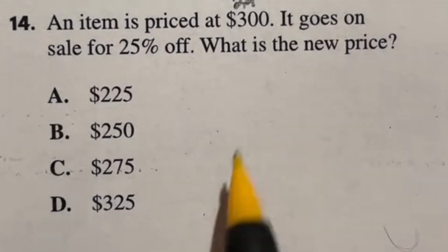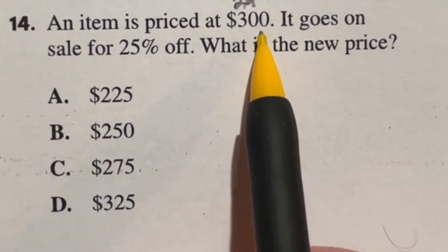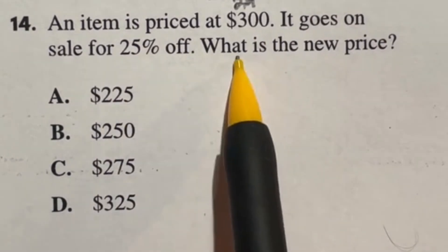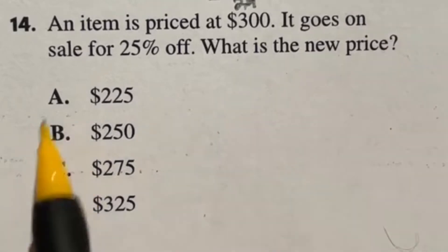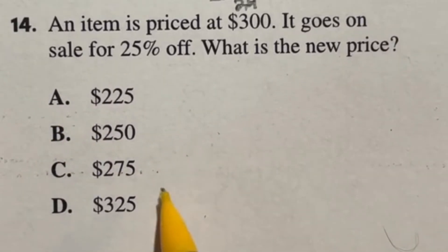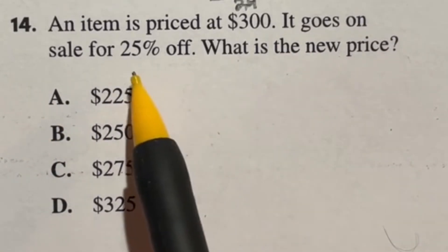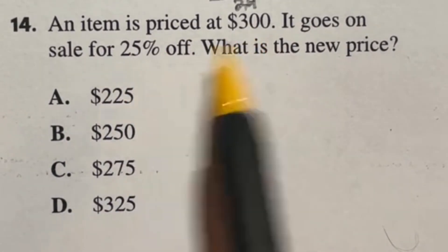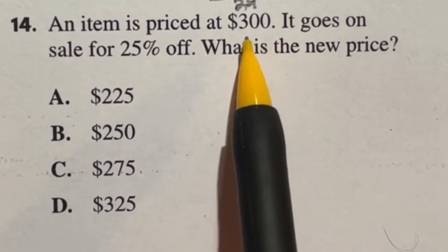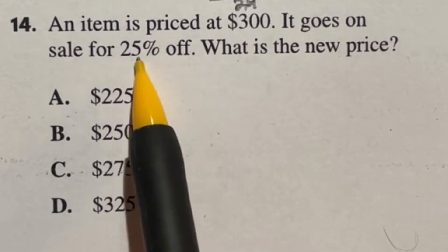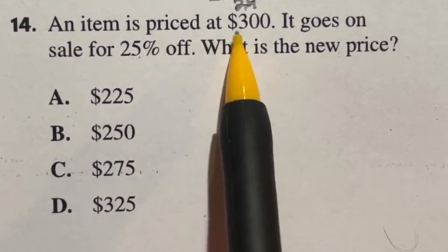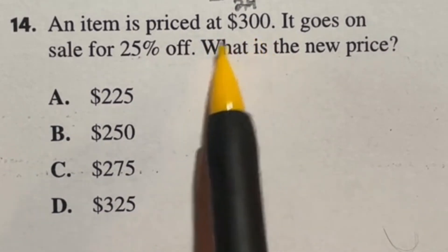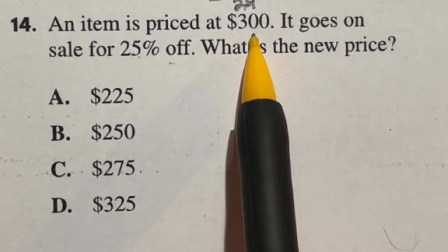An item is priced at $300. It goes on sale for 25% off. What is the new price? So number 14 on the ASVAB military entrance exam is essentially just asking you to find out what is 25% of 300 and then subtract that off the 300. Now at the same time, if you take off 25%, you would have 75% left over. So you also could just find 75% of 300.